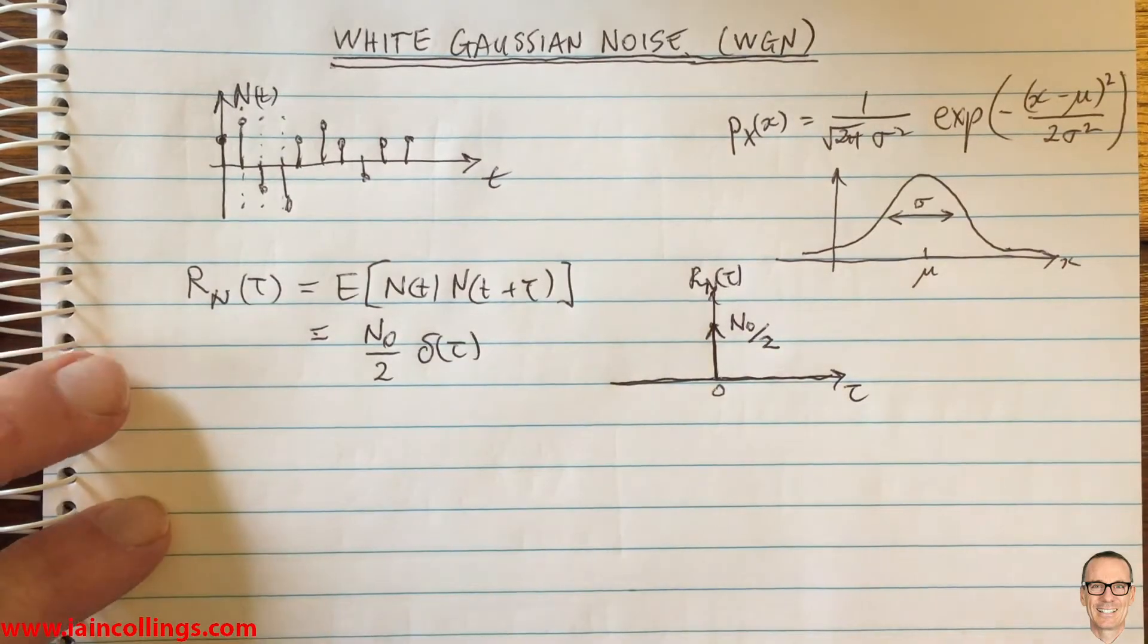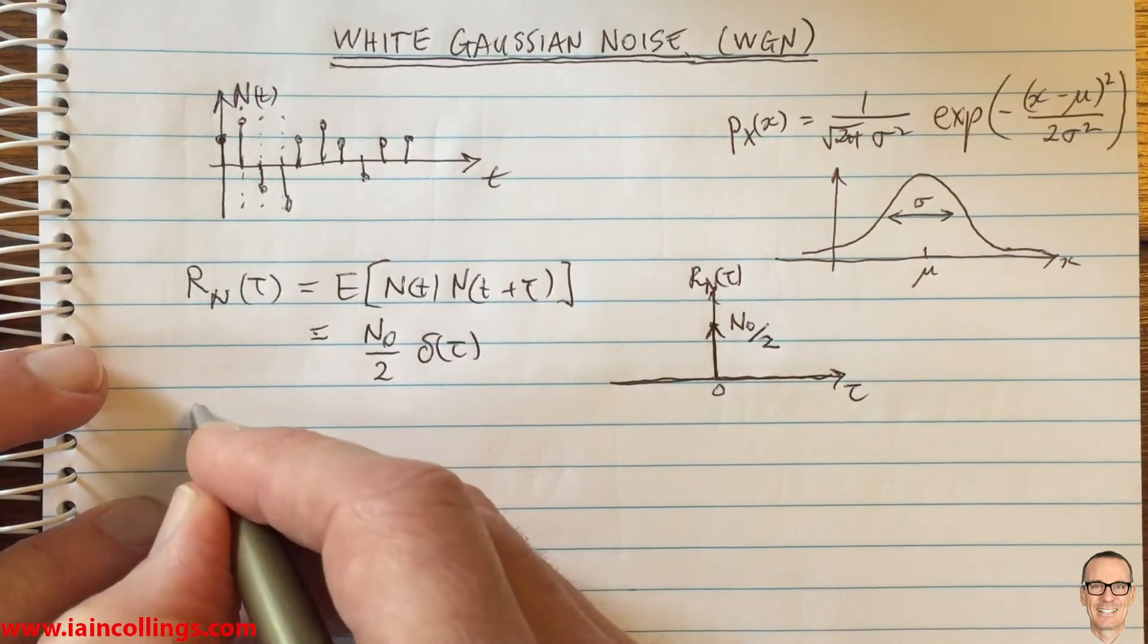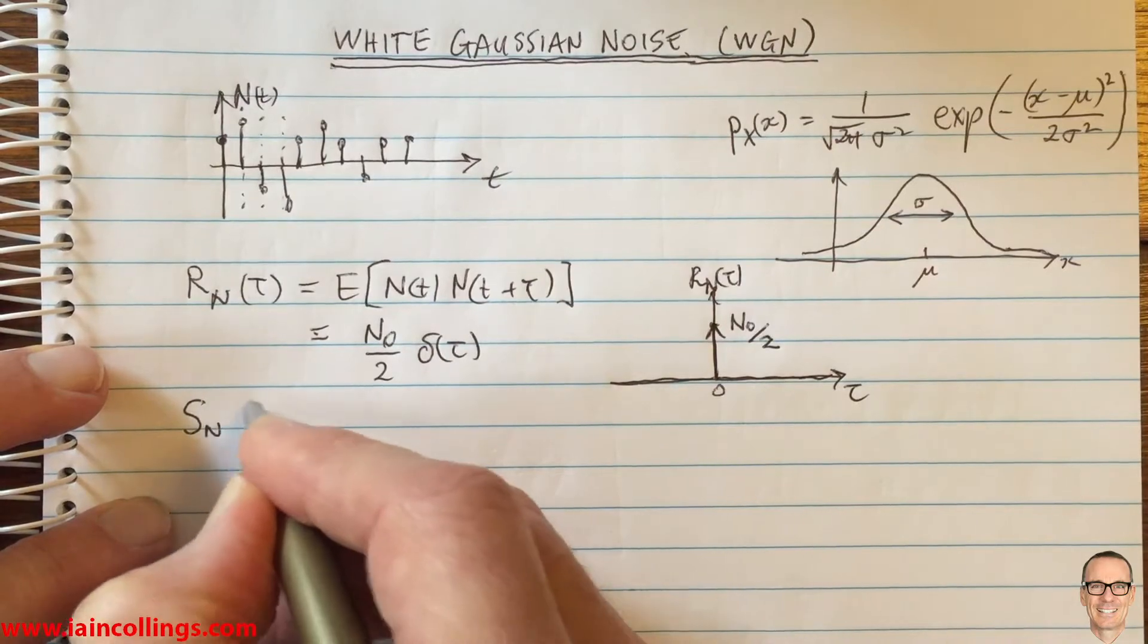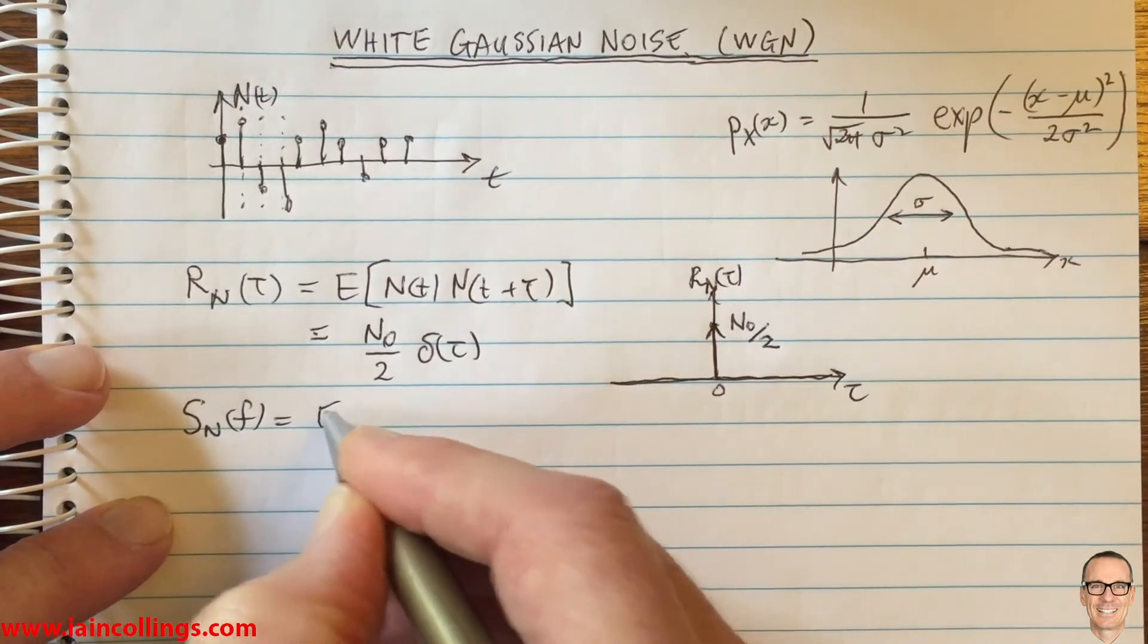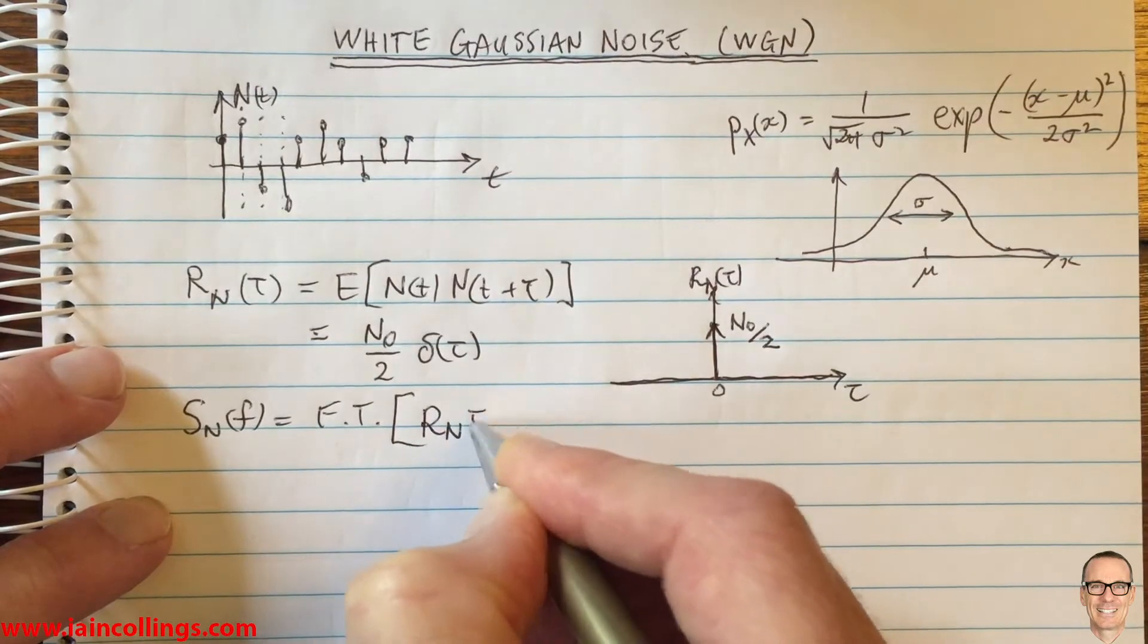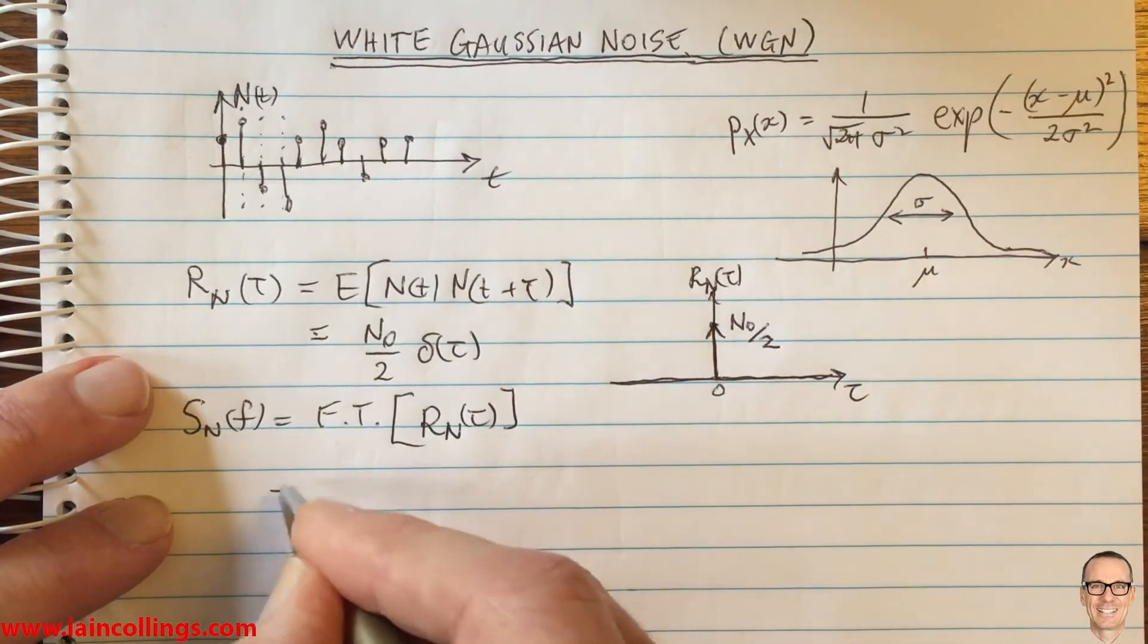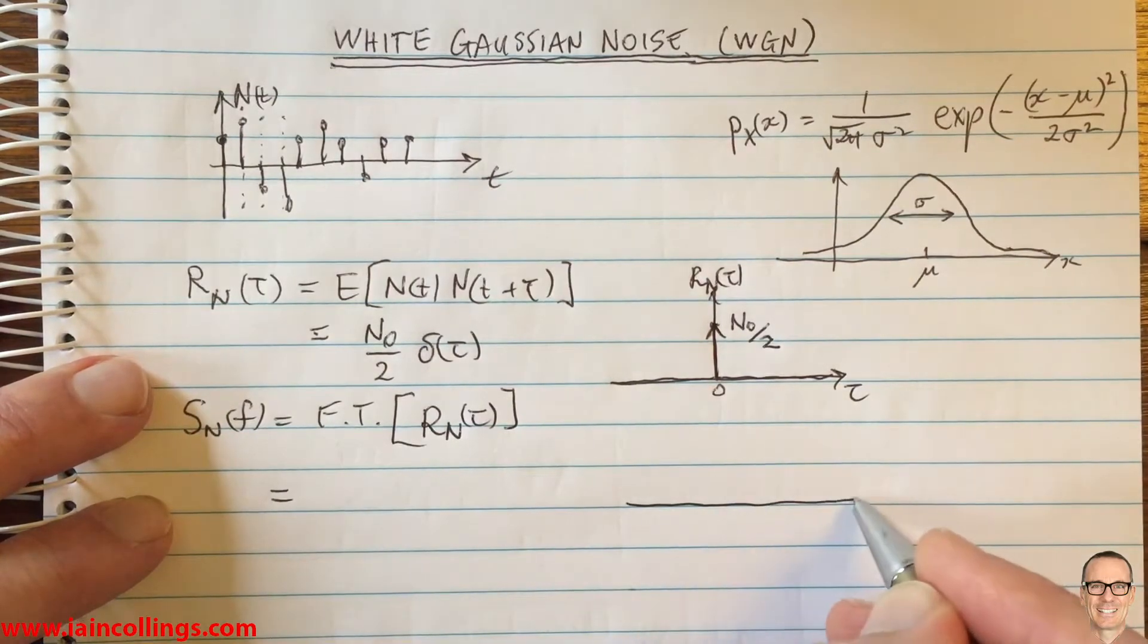If we look in the spectral domain, in the frequency domain, this gives us the power spectral density. The power spectral density is, as you know, the Fourier transform of the autocorrelation function. And the Fourier transform of a delta is, of course, a constant.